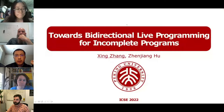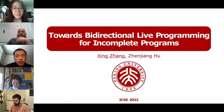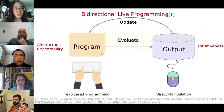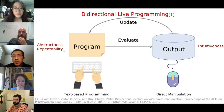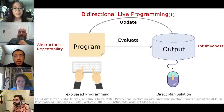Now we'll jump over to Xin Zhang. Hello everyone, I'm Xin Zhang, a second-year PhD student at Peking University in China. The title of our work is 'Towards Bidirectional Live Programming for Incomplete Programs,' a joint work with Dr. Wu also from Peking University. To combine the intuitiveness of direct manipulation on the output with the abstractness and repeatability of text-based programming, researchers have developed many useful bidirectional live programming systems.